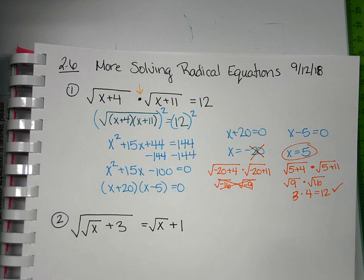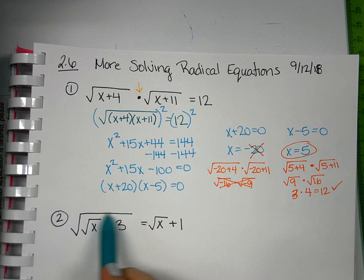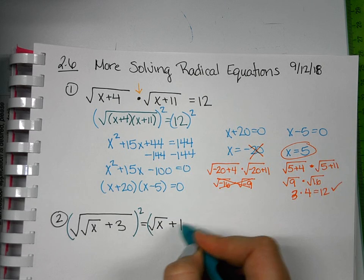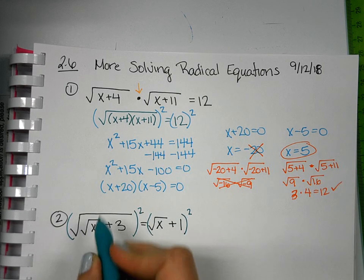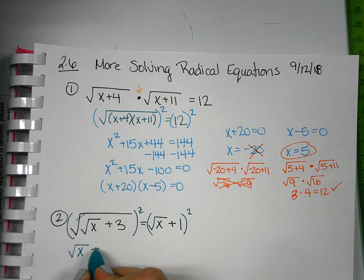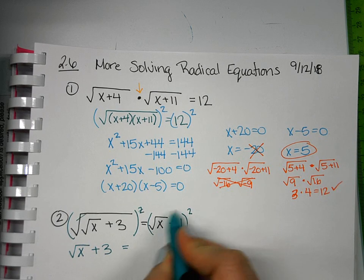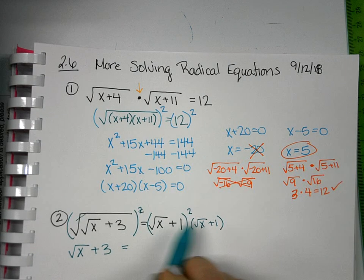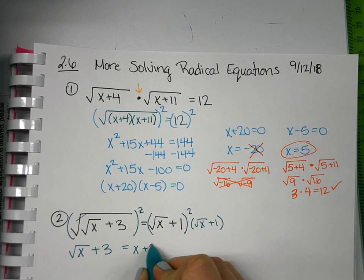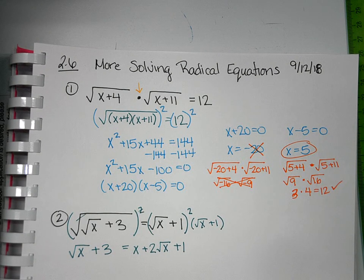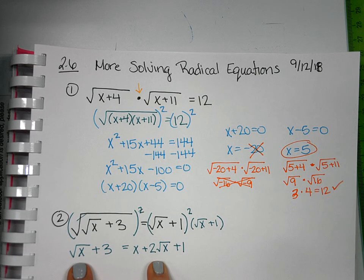To isolate this big radical, we already have it isolated. If I square both sides, it's only going to cancel this outer one, leaving me with the square root of x plus 3 equals, and then over here, remember we have to write it out twice and foil it together. So I'll have x plus 2 square root of x plus 1 on the right.